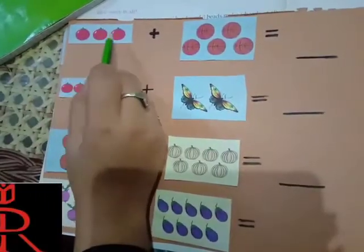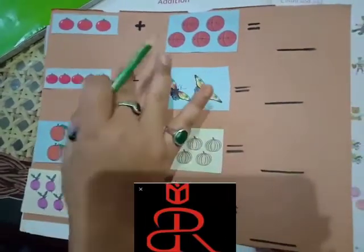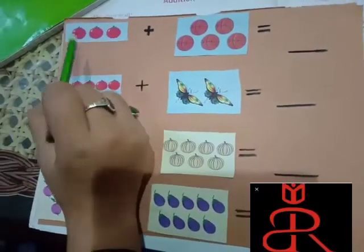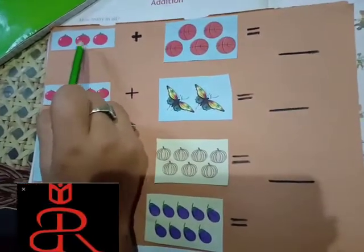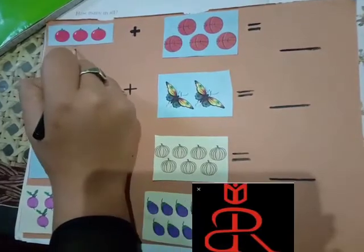Now, we will do the addition sums in this flash card. See beta, how many tomatoes are there? One, two, three. We have three tomatoes.